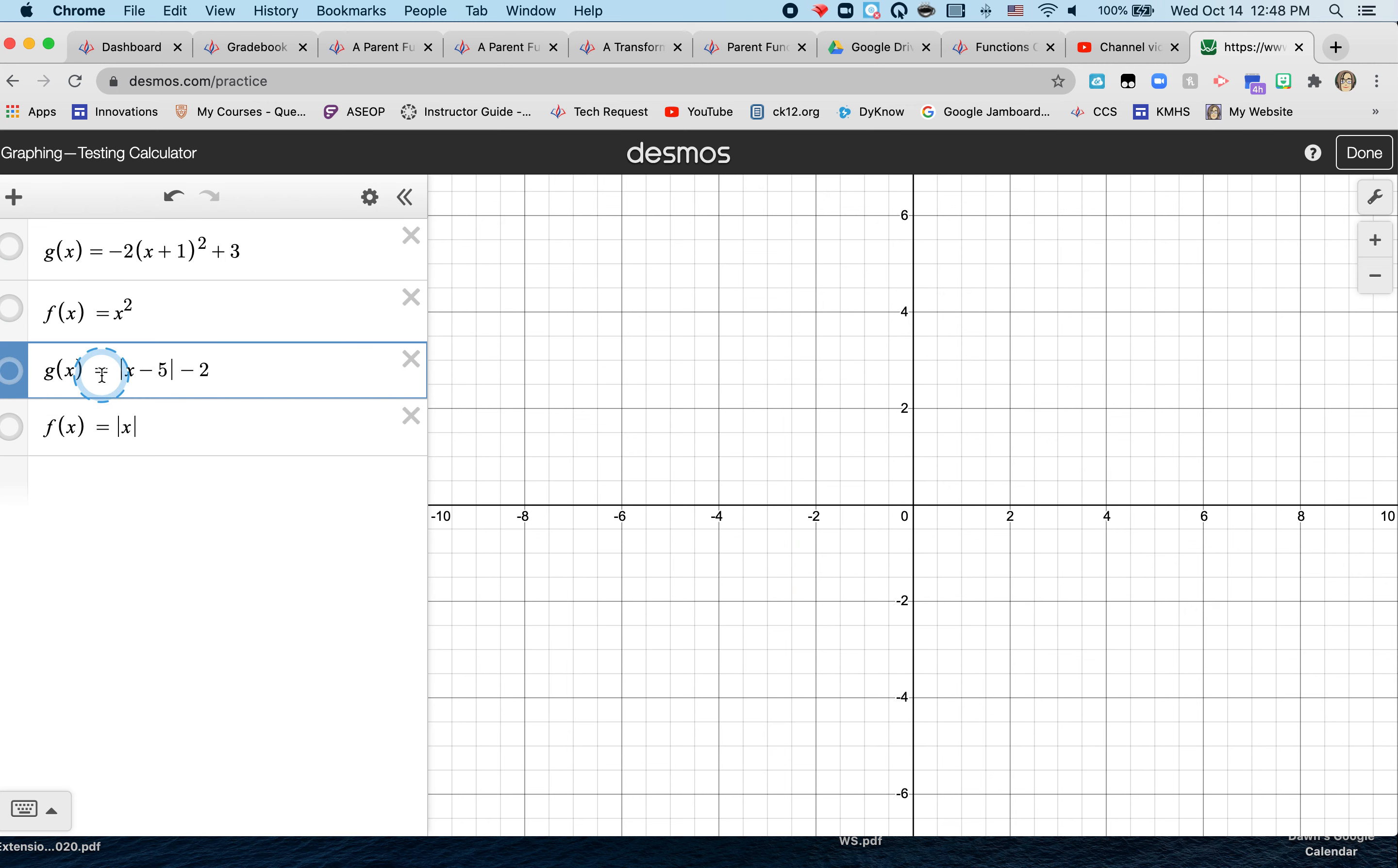Example 2, you have the equation g(x) is the absolute value of x minus 5 minus 2. You have to identify the parent function and tell me how it moves.